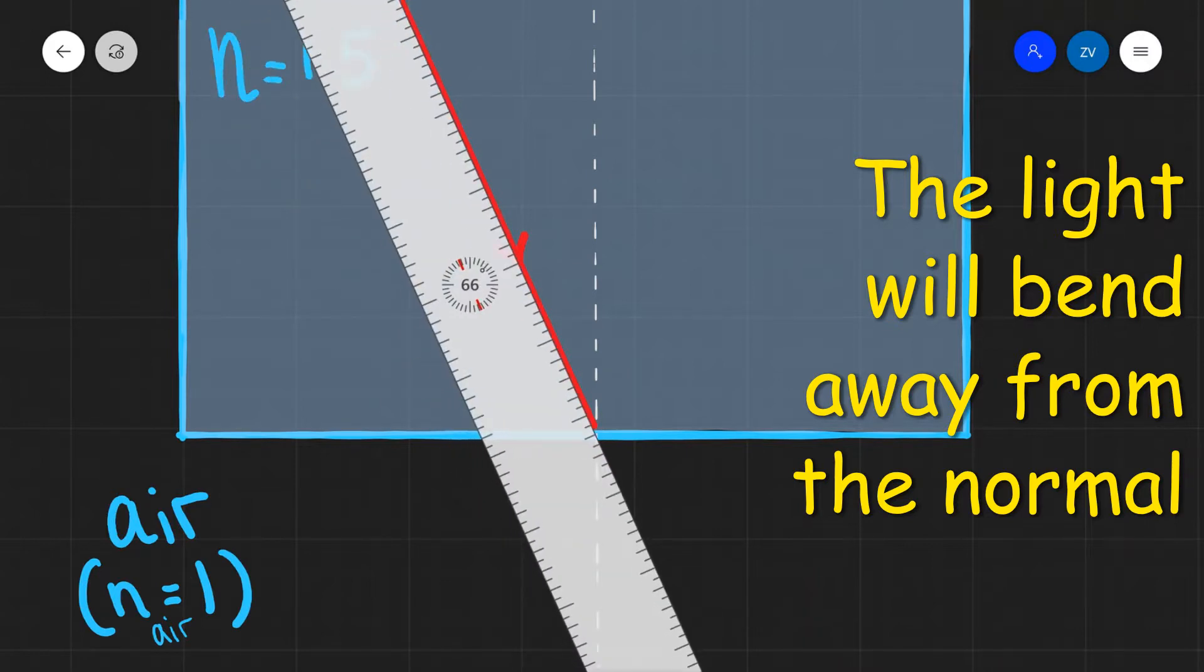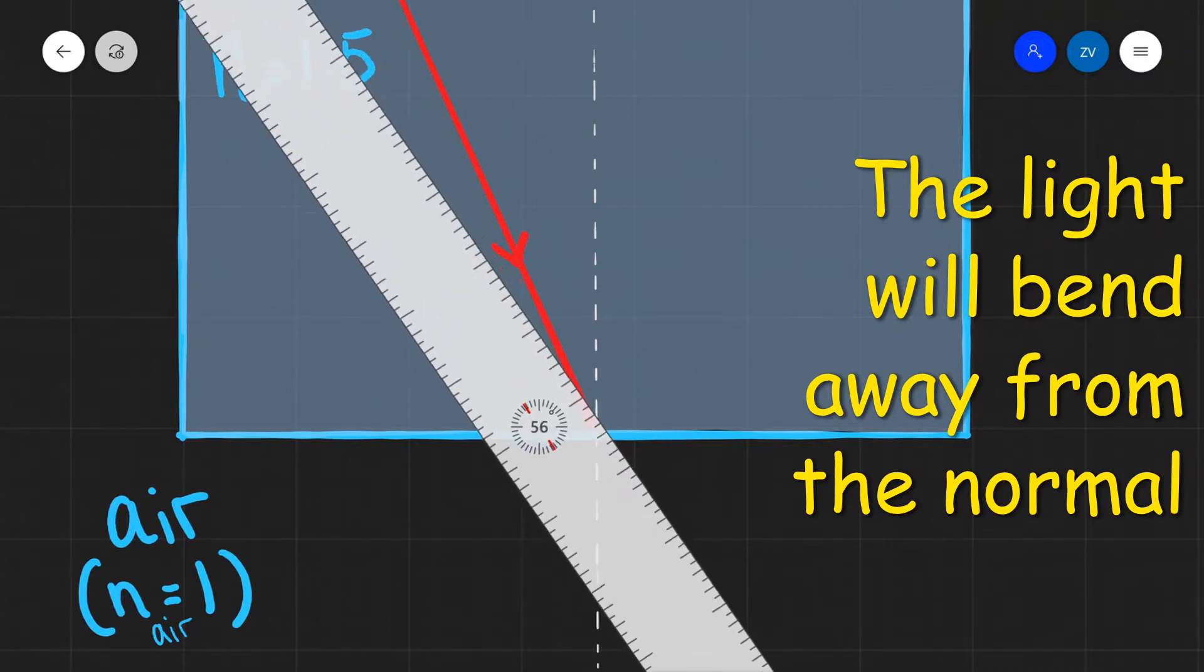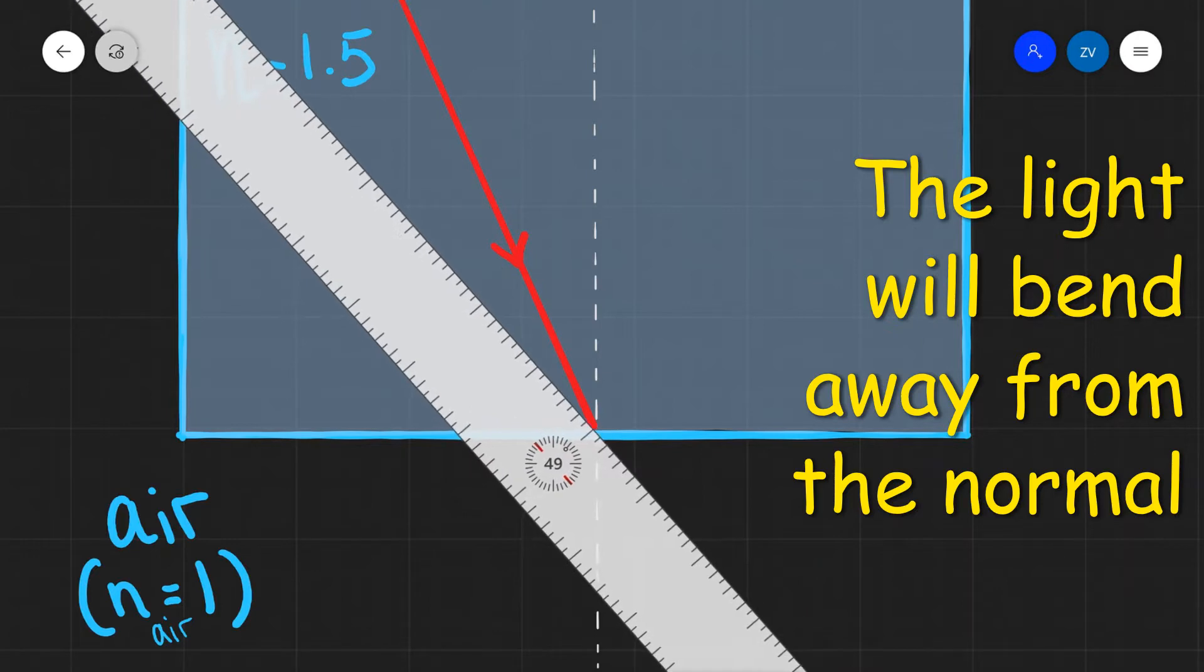So this means that rather than going straight the ray is going to bend away from the normal at some angle of refraction.